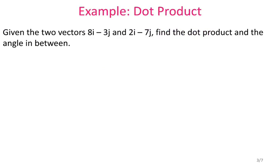So here we go. Given the two vectors, 8i minus 3j and 2i minus 7j, find the dot product and the angle in between. So first of all, I'm going to take my vectors and I'm going to write it in the other form, not the ij form, but what I like to call wedge form. So I'm going to say vector A is 8 negative 3 and vector B is 2 negative 7.